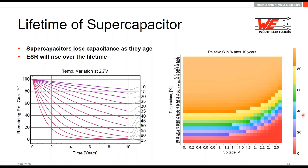Regarding the lifetime diagram: the Y-axis on the left diagram shows the remaining relative capacitance. For example, at 40°C after 10 years you have 20% of your initial capacitance remaining — so if you started with 10 farad, you'd have 2 farad at the end. The bar chart on the right shows the same information — remaining relative capacitance in percentage — just in a different visual format.